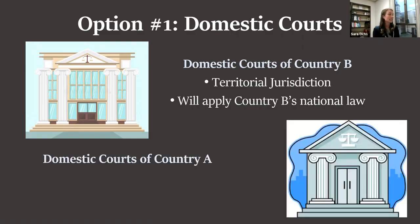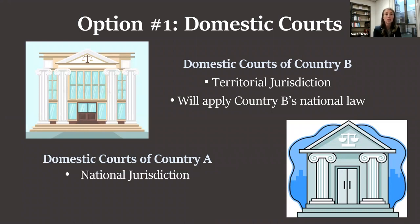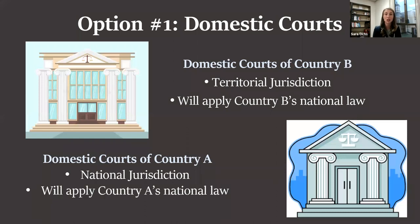Our second option is the domestic courts of country A. These courts also have the ability to prosecute, though this is less likely since the soldiers most likely acted under their military or governmental officials' authority. Country A's domestic courts still have authority to prosecute the soldiers under national jurisdiction — meaning a court has authority to prosecute its own nationals. This court would apply country A's national law, which could incorporate legislation on war crimes.